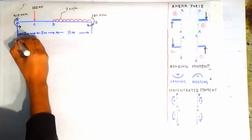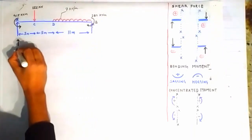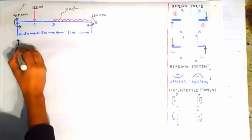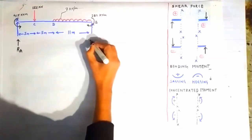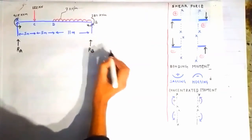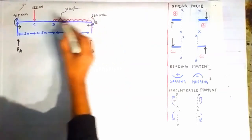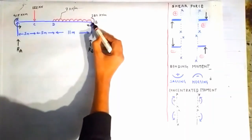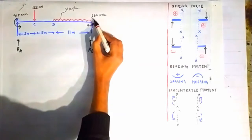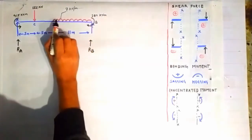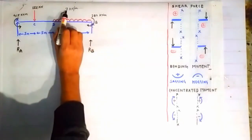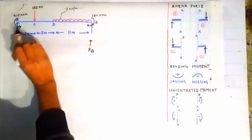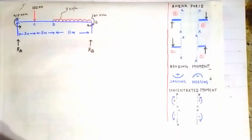The first step is always to determine the reactions at the points. The reaction at point A is RA and the reaction at point B is RB. At point A there is a concentrated moment acting, and at point B there is also a concentrated moment. There is a UDL having intensity 7 kN/m and a point load acting at point C. We have to draw the shear force and bending moment diagram.